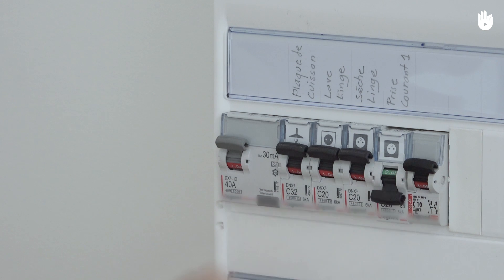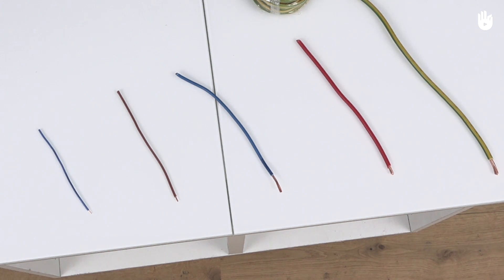Before this electrical intervention, please turn off the power for the network concerned. For this operation, you will need 1.5, 2.5, 4, 6, and 10 mm squared conductors.